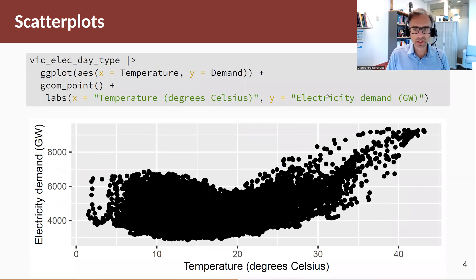Okay, so let's have a look at a scatter plot. We're now on our y-axis we have electricity demand in gigawatts and on our x-axis we have temperature in degrees Celsius, and this now allows us to see what the relationship between these two variables are. What we can see here is that clearly this is a non-linear relationship.